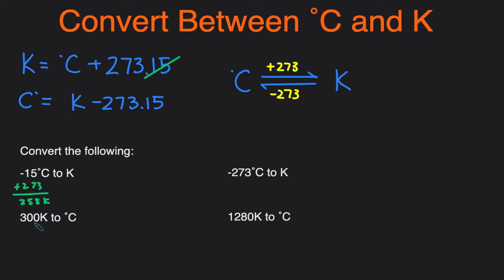Then we're going from 300 degrees Kelvin to degrees Celsius, so we're going the opposite direction. Kelvin to Celsius we just subtract 273 and we'll get 27 degrees Celsius.